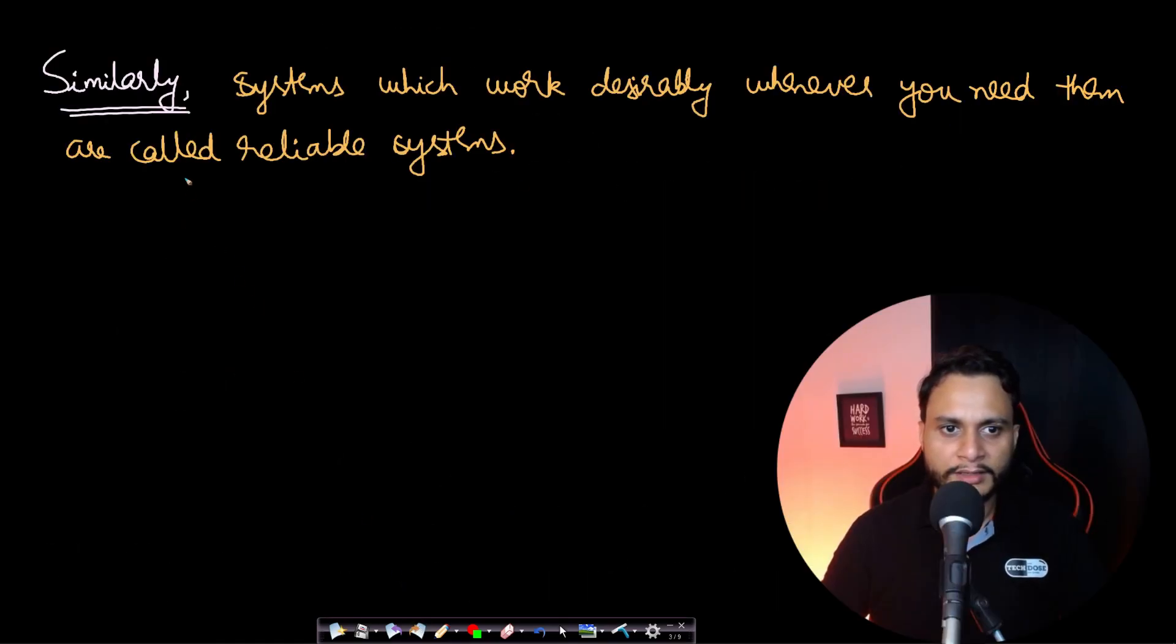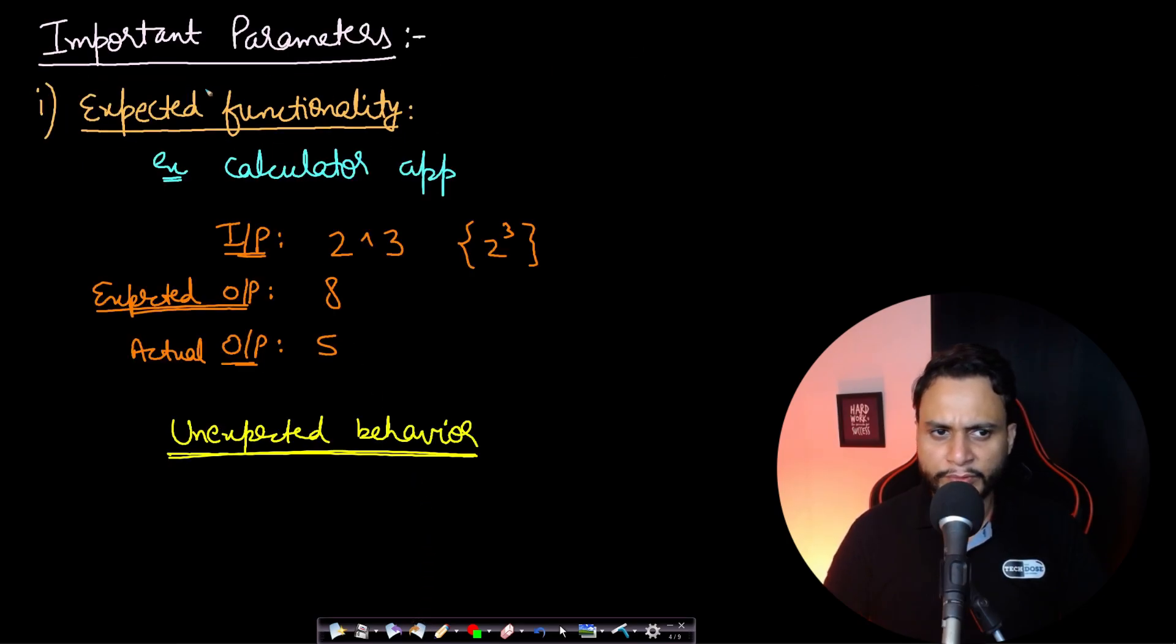Similarly, it goes for systems. The systems which work desirably whenever you need them are called reliable systems, just as I gave you the friend example previously. Now what does this term 'desirably' mean? What do we actually desire from a system? Let's look at some of the points. The first one is your system must perform expected functionality.